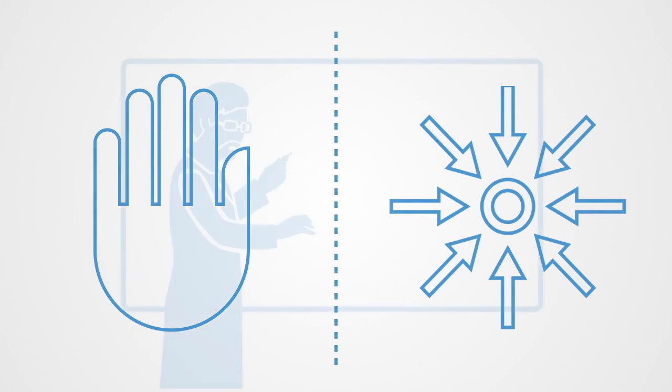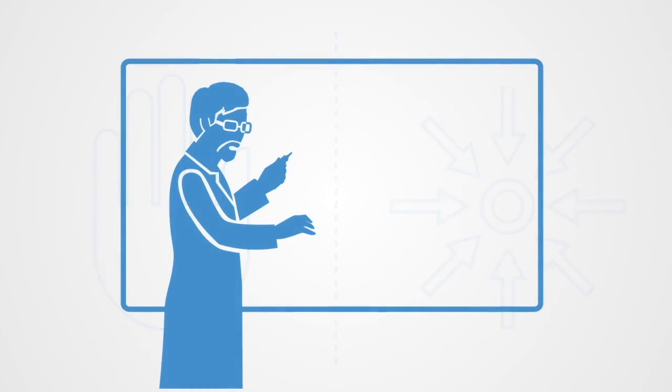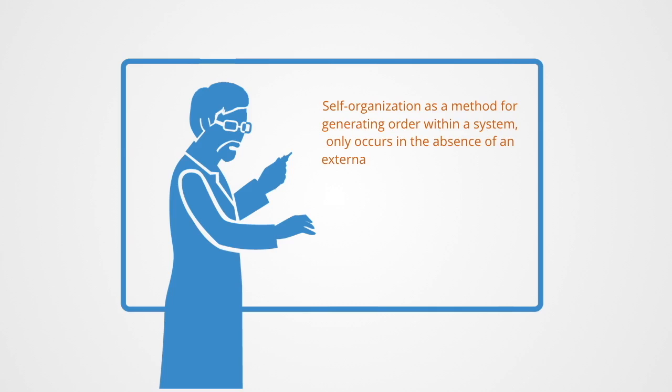Finally, it's important to note the dynamic nature of self-organization. Self-organization as a method for generating order within a system only occurs in the absence of an externally given order.